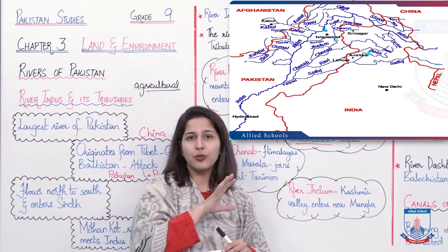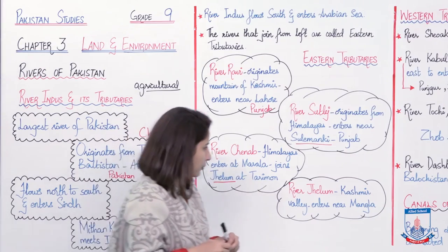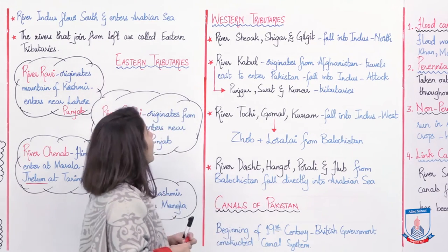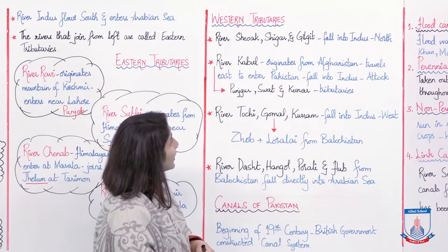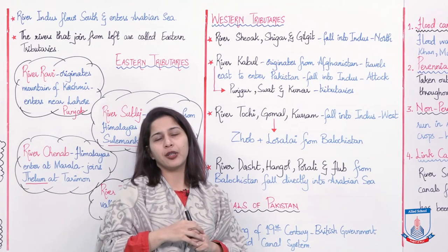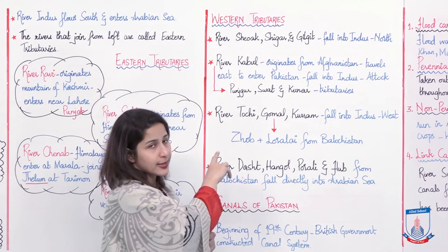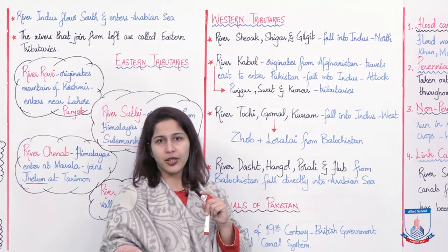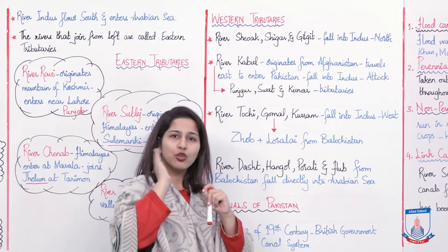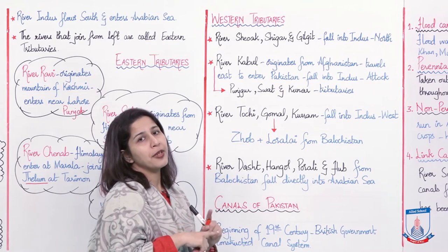The map shows the exact locations of how these tributaries join the main River Indus and how they supply water to each and every area of Pakistan. Now, moving on to the western tributaries, which enter from the right side. First, rivers Shoak and Shigar in Gilgit — these three rivers start in the northern mountains and fall into River Indus from the upper northern side. River Kabul originally originates from Afghanistan, our immediate neighbor with whom we share a border. From Afghanistan it travels east and enters Pakistan, and falls into River Indus at Attock.